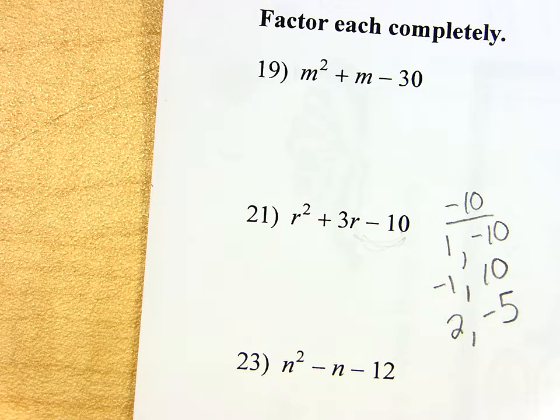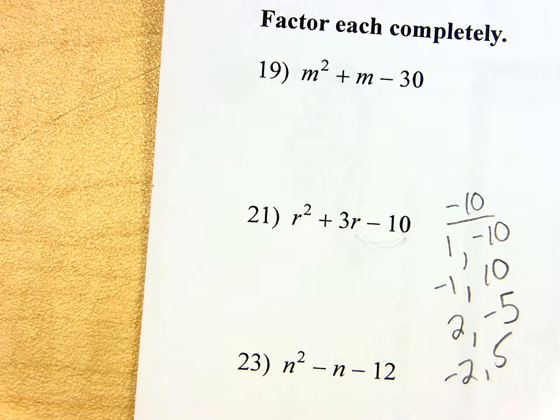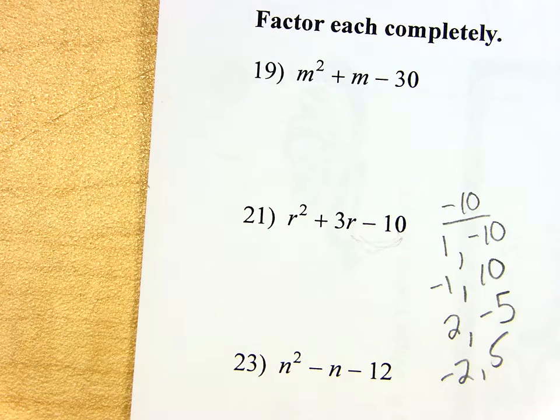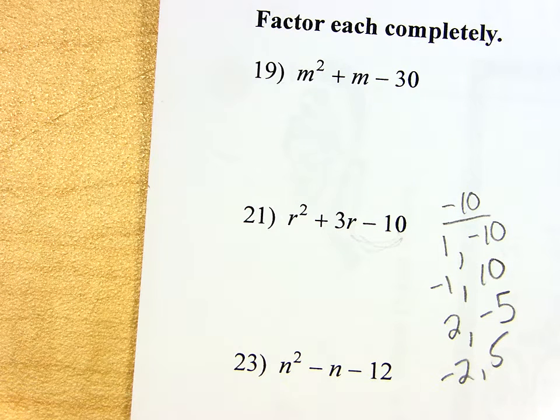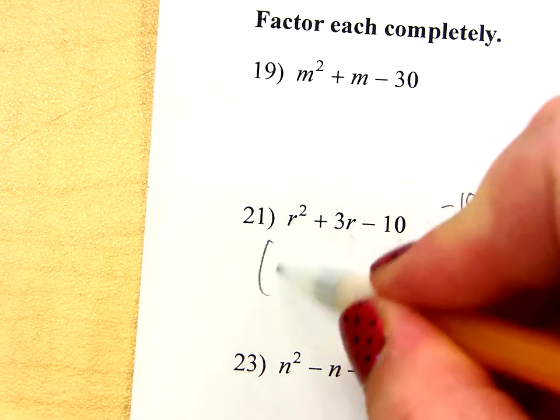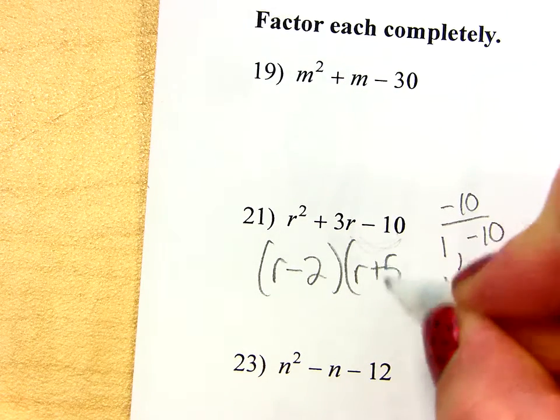No, that adds to be a negative 3, so that means my negatives have to switch. See how those two still multiply to be negative 10, but they're going to add to be a positive 3? So, your answer is this, it's the same idea. It's just now, instead of having positives, I'm just going to have a minus 2. So, one of my factors will be R minus 2, and the other one will be R plus 5.